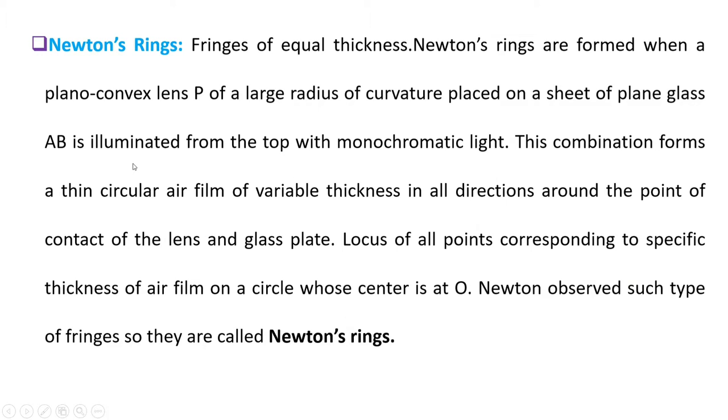And they are formed when a plano-convex lens P of large radius of curvature is placed on a sheet of plain glass plate. And that system is illuminated from the top with monochromatic light. And this combination forms a thin circular air film of variable thickness in all directions around that point of contact of the lens and that glass plate.